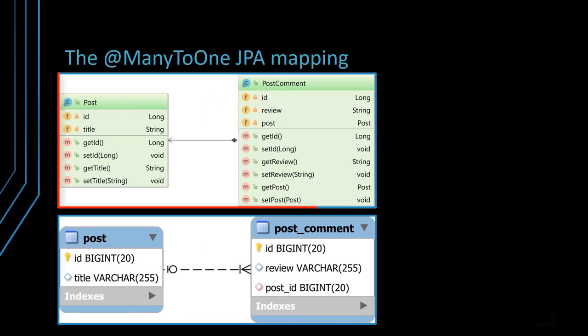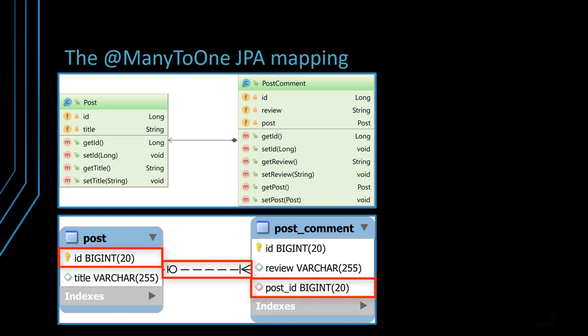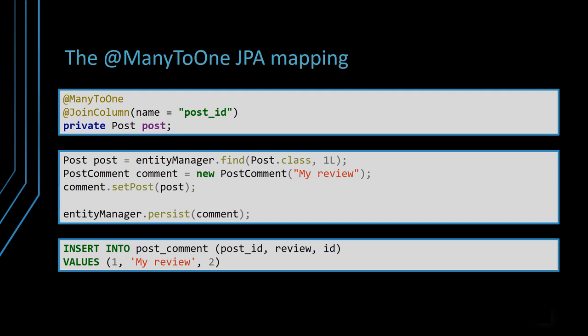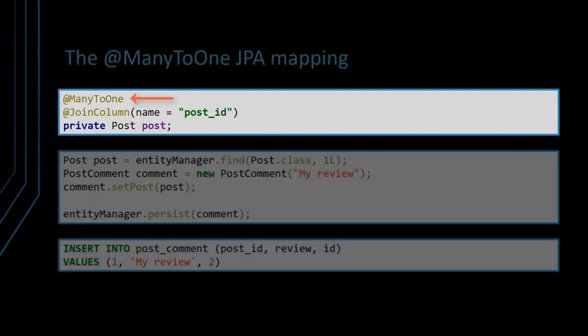The many-to-one relationship is the most common JPA association and it maps exactly to the one-to-many table relationship. Just like the post comment table has a foreign key relationship with the post table primary key, the post comment entity contains a post property that is mapped as a many-to-one JPA association. To map a one-to-many table relationship on the child side of the object-oriented entity graph, you need to use the many-to-one annotation.